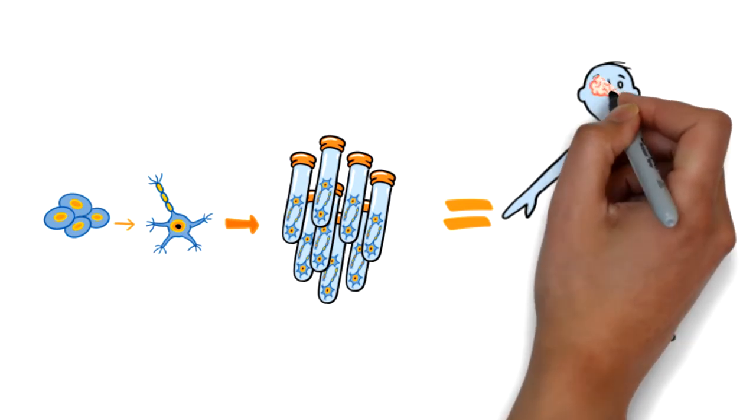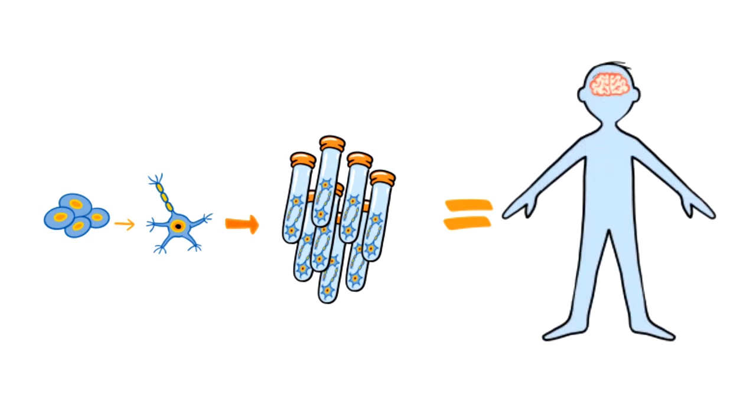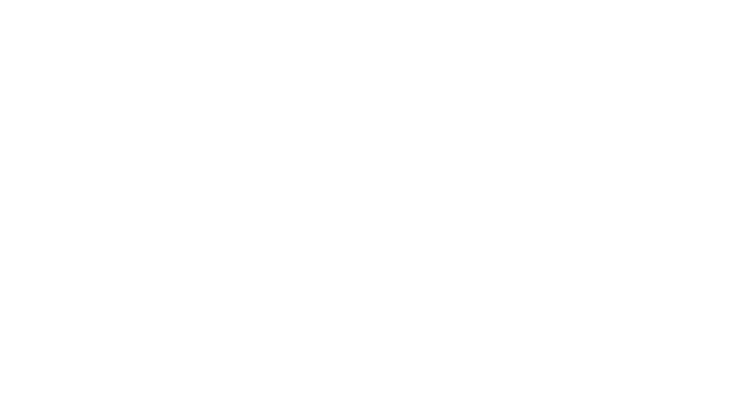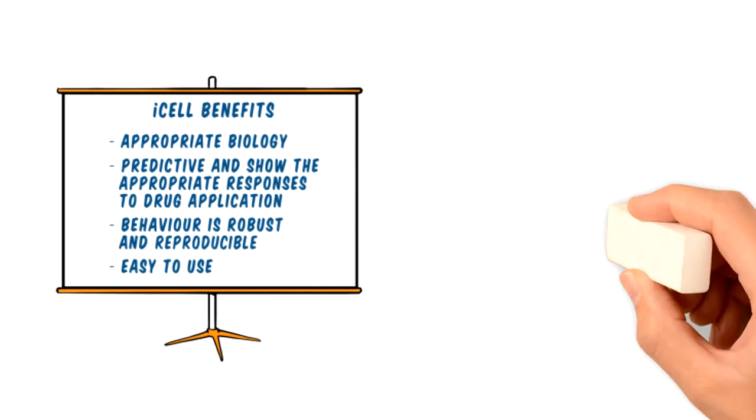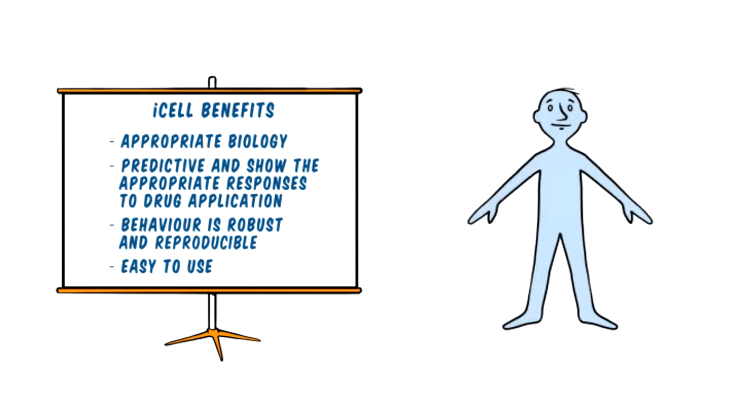Human glutamatergic neurons derived from IPSCs and manufactured in large quantities. iCell Glutoneurons enable a shift from the traditional experimental paradigm of less desired animal models to relevant human models.